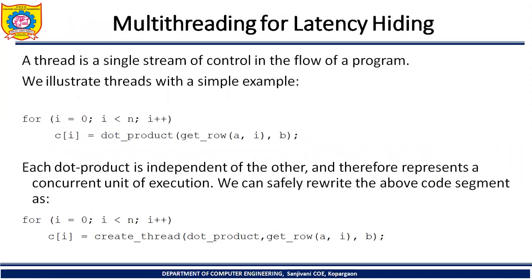Multithreading for latency hiding is the very widely used and common practice for hiding the latency. A thread is a single stream of control in the flow of a program. We illustrate threads with a simple example. Here the dot product code is given: for i = 0, i < n, i++, C[i] = dot_product(get_row(A, i), b). This sample code performs the multiplication of each row with the vector element — that is a dot product in case of a vector-matrix product.